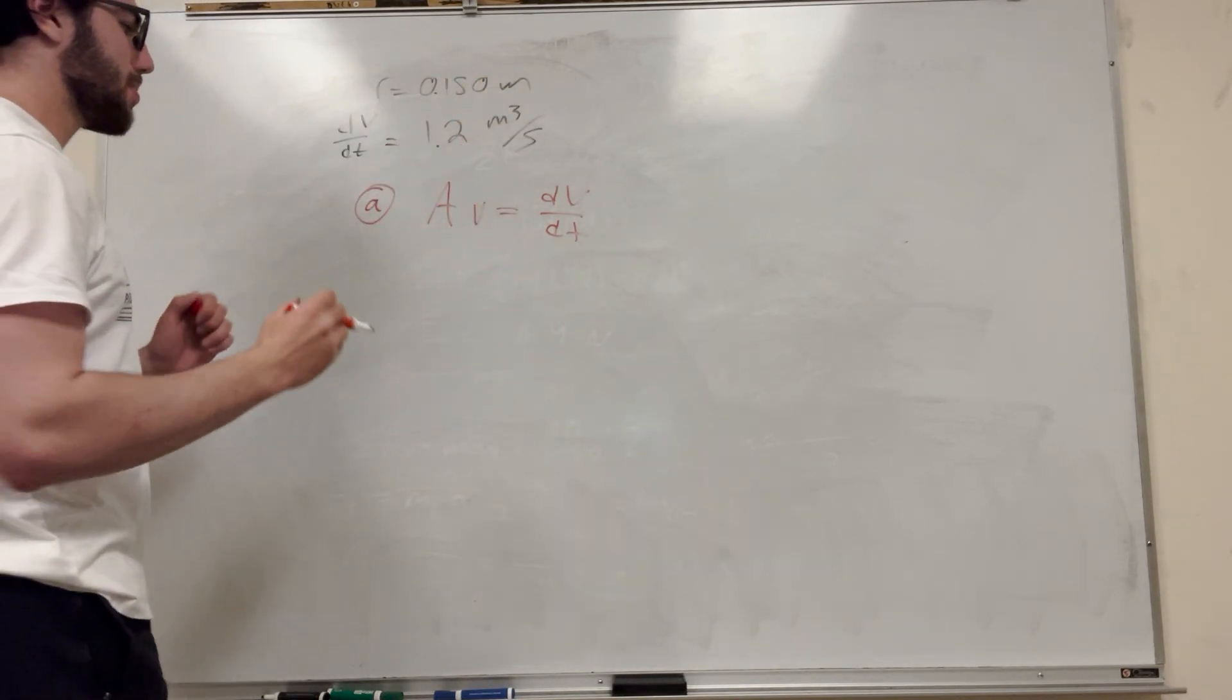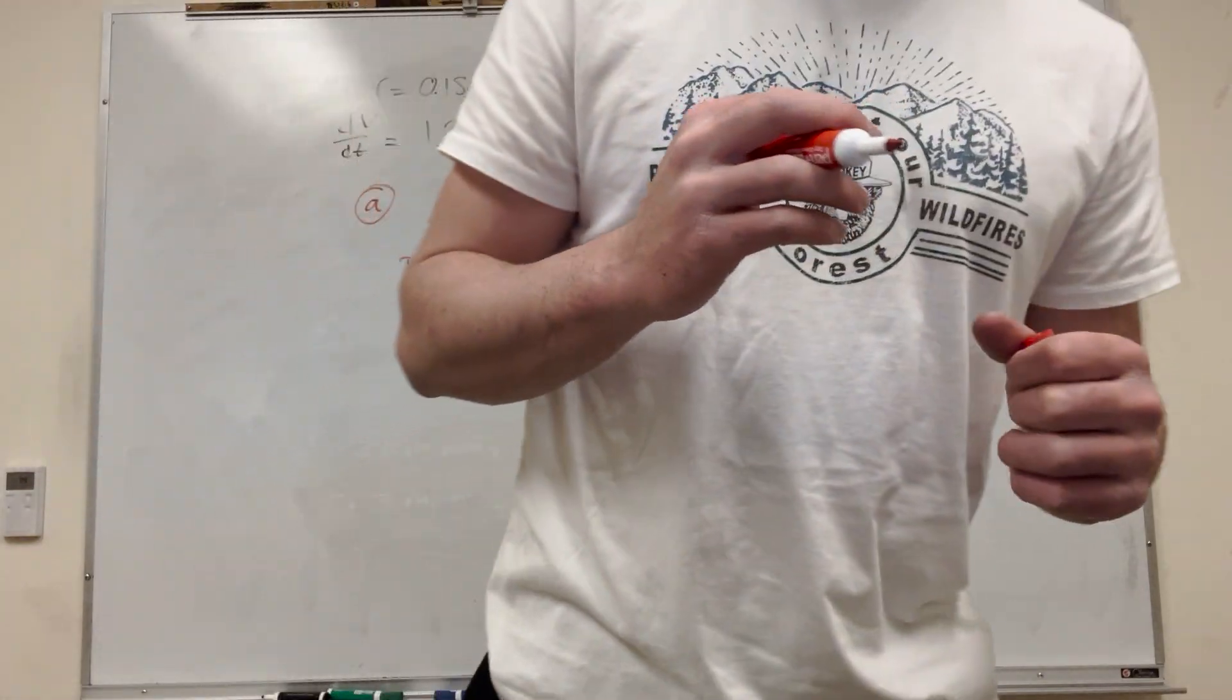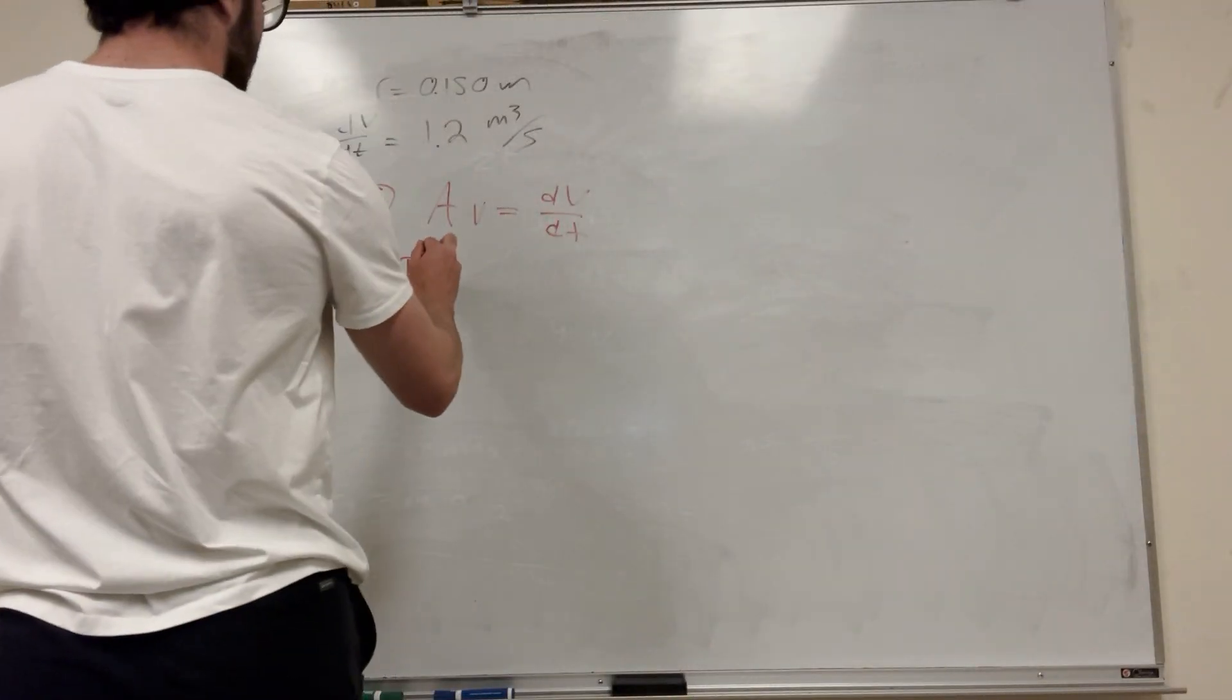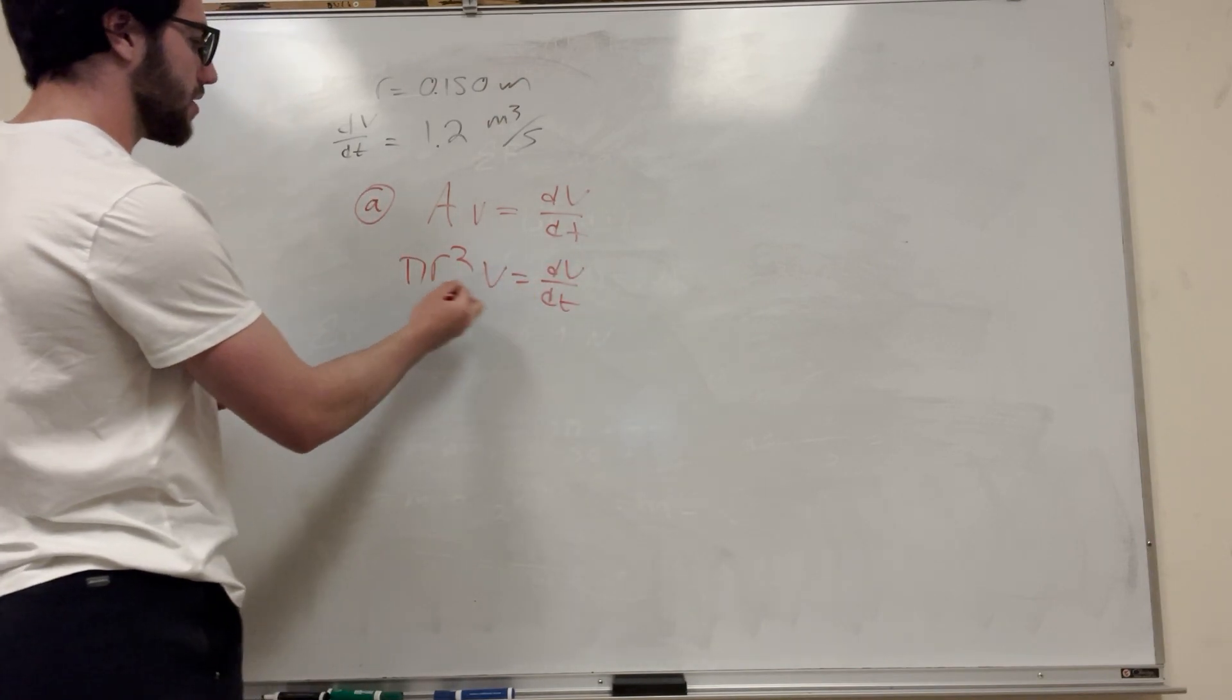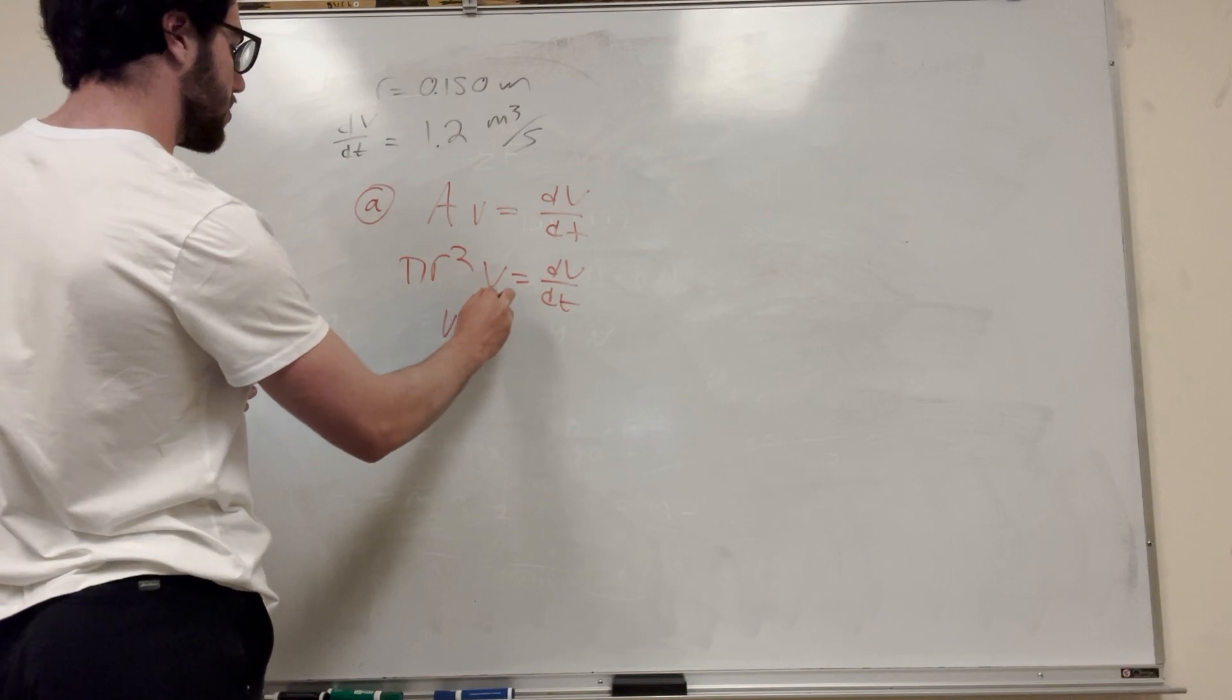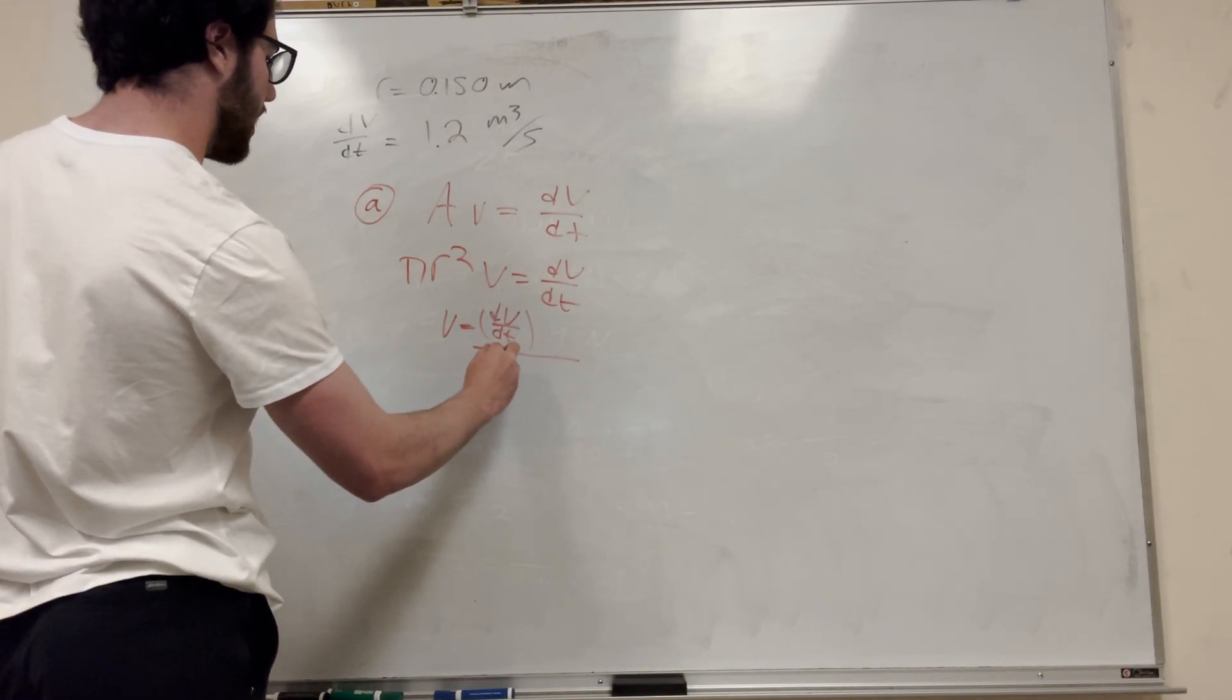The cross-sectional area is pretty simple. It's a circular pipe, so it's πr² times velocity equals dV/dt. We're trying to find velocity, so velocity equals dV/dt divided by πr².